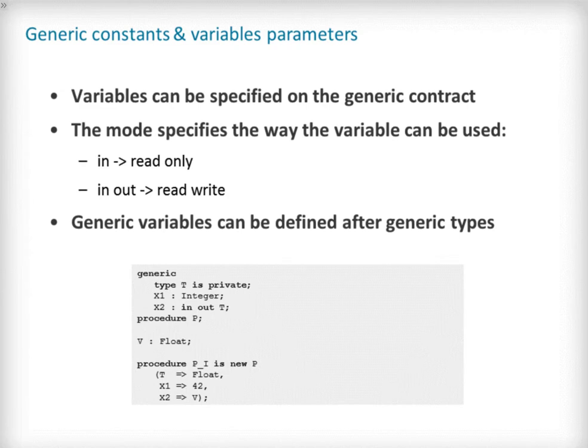A constant can also be simulated using an in variable. These parameters provide a way for the generic unit to force the user to provide objects at instantiation rather than at call time if the unit is a function or procedure. Like we have previously seen for array typed generic parameters, it is possible for generic variables to be typed using other generic typed parameters. In the example below we see that P has a contract using a private type T, an integer, and an in-out variable of the private type T. The compiler will ensure the variable X2 is of the same type as that specified for T when P is instantiated as PI.